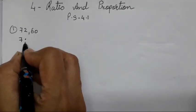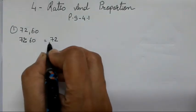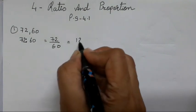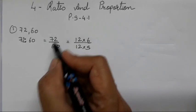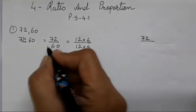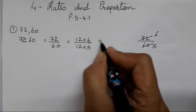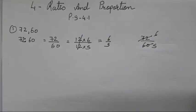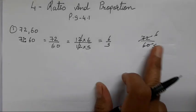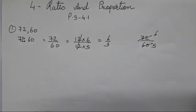In ratio form it will be 72 upon 60. Now 12 sixes are 72 and 12 fives are 60, so you can reduce it — 12 sixes are and 12 fives are — your answer is going to be 6 upon 5. You can use any one method: if you know the tables you can directly reduce it as shown, or you can show it step by step. Both ways I am going to show you.